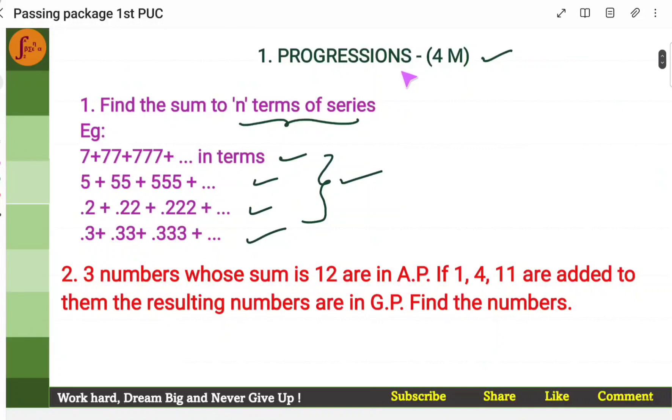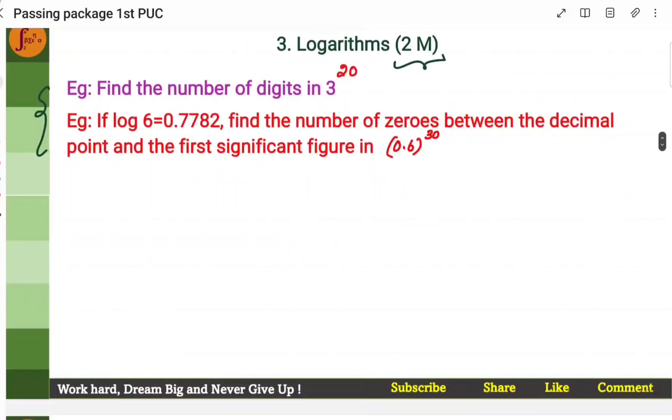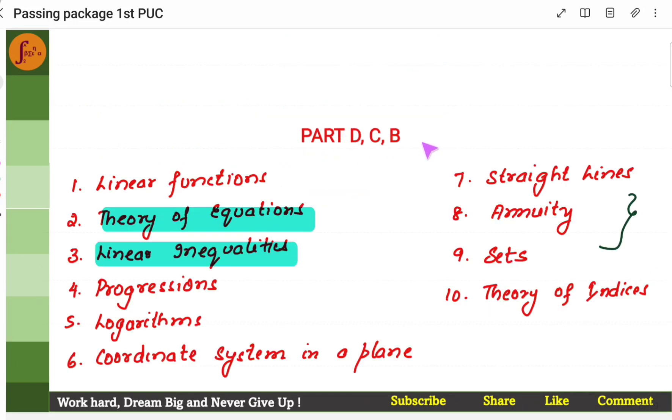These are few examples of annuity related questions. If you are thorough with progressions, linear functions, straight lines and logarithms or annuity, you can easily score 10 marks in part T. Now, let's look at part D, C and B. Again, part D should be given a lot of priority and importance because they are 5 marker questions.